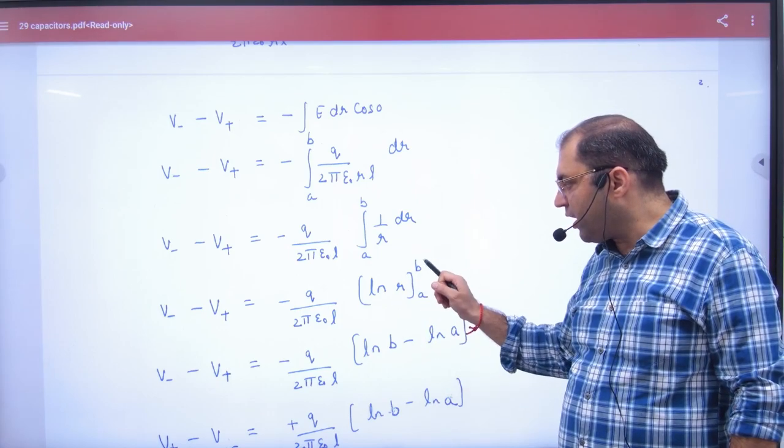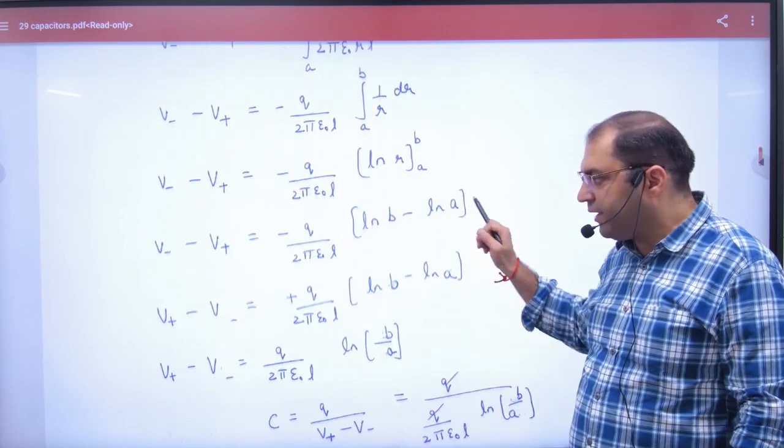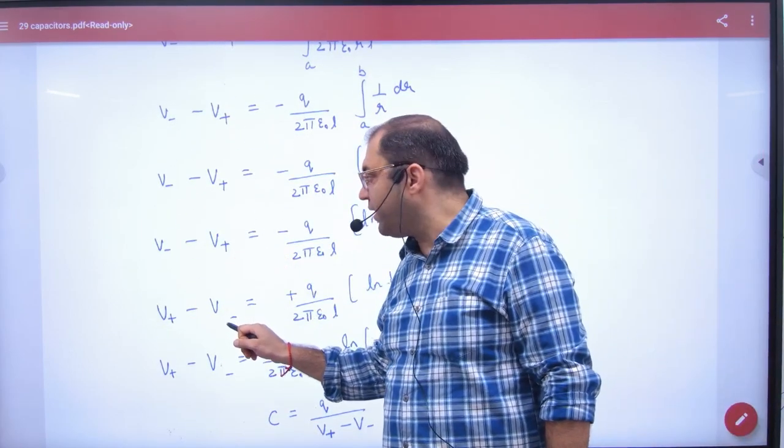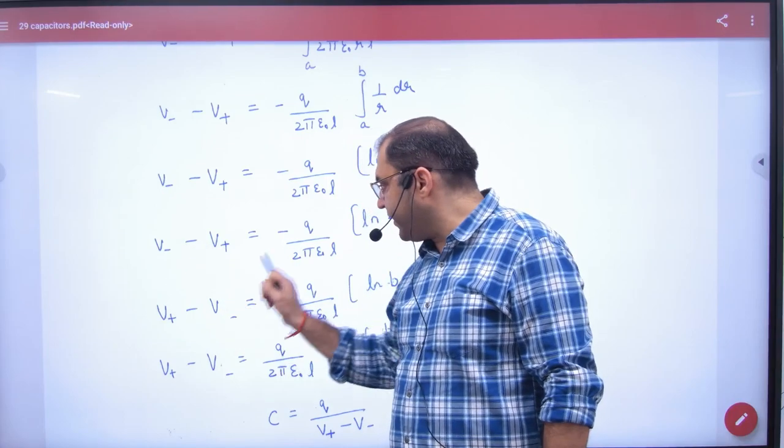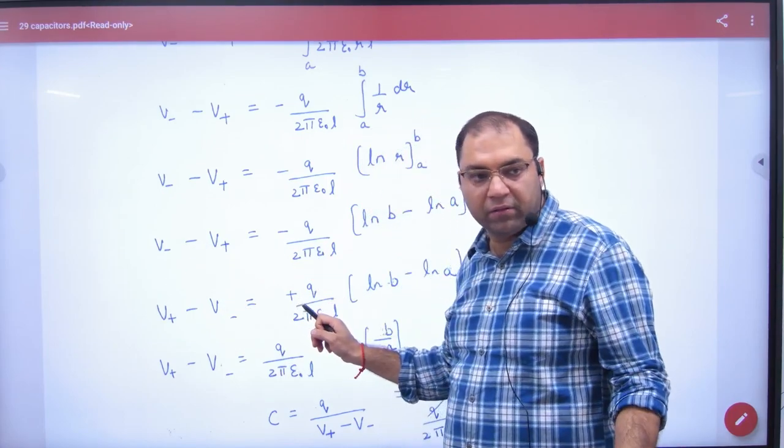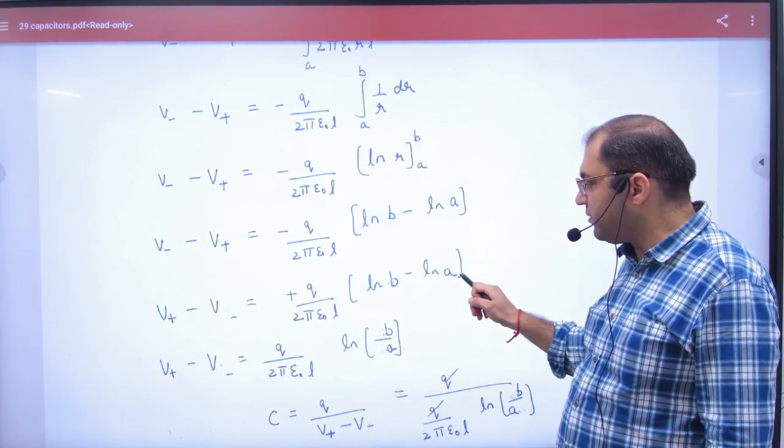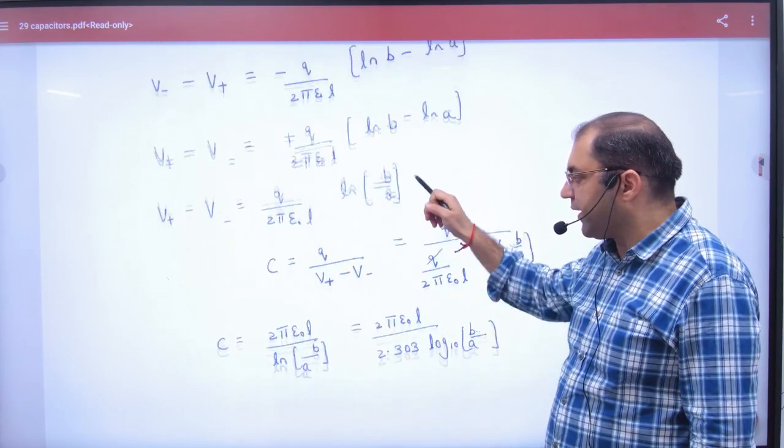So one time r equals b, one time r equals a, then this term. But because we have a small potential, reverse it. What will happen? Plus. Log of first term minus second term is log of first term divided by second term.